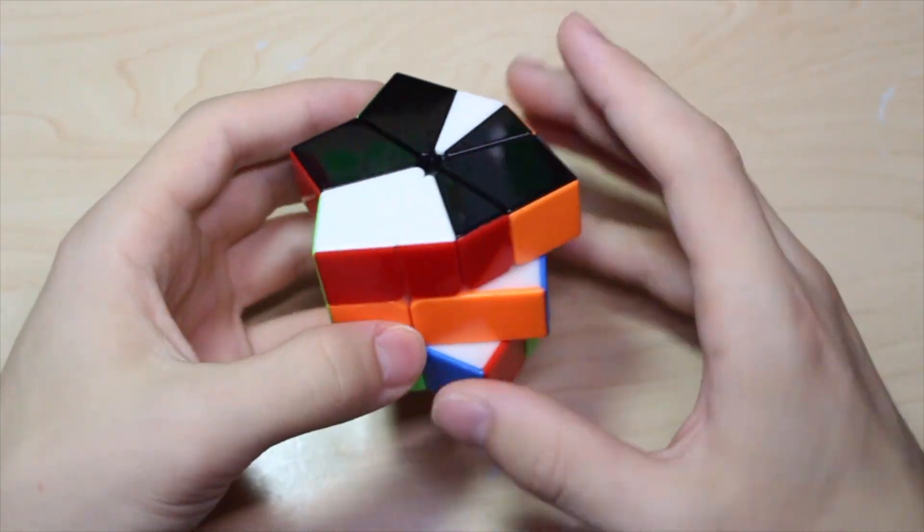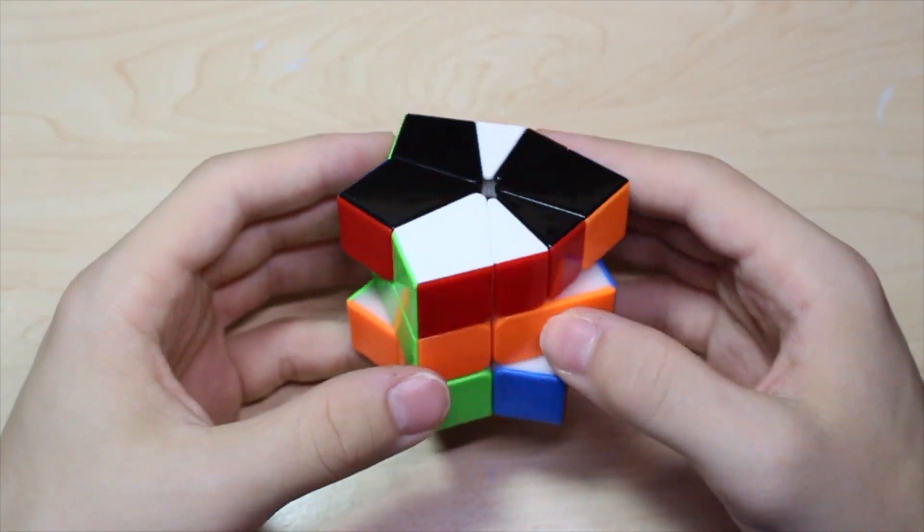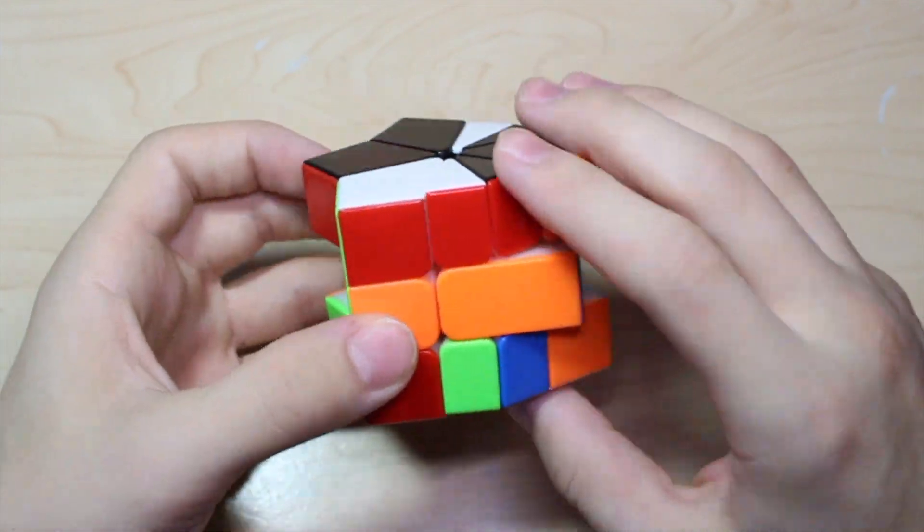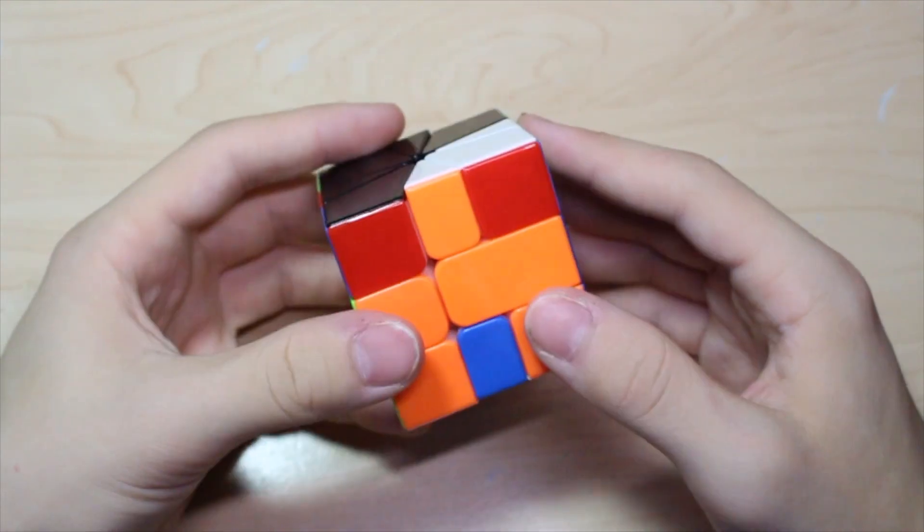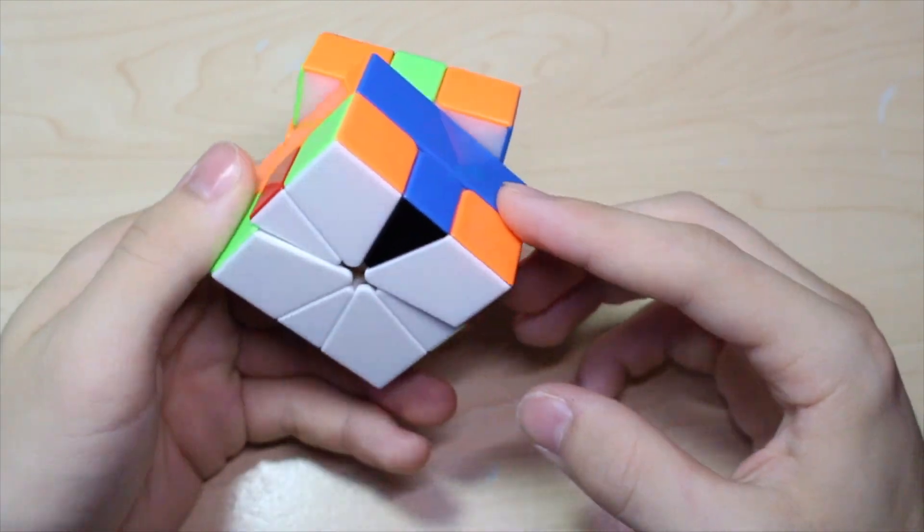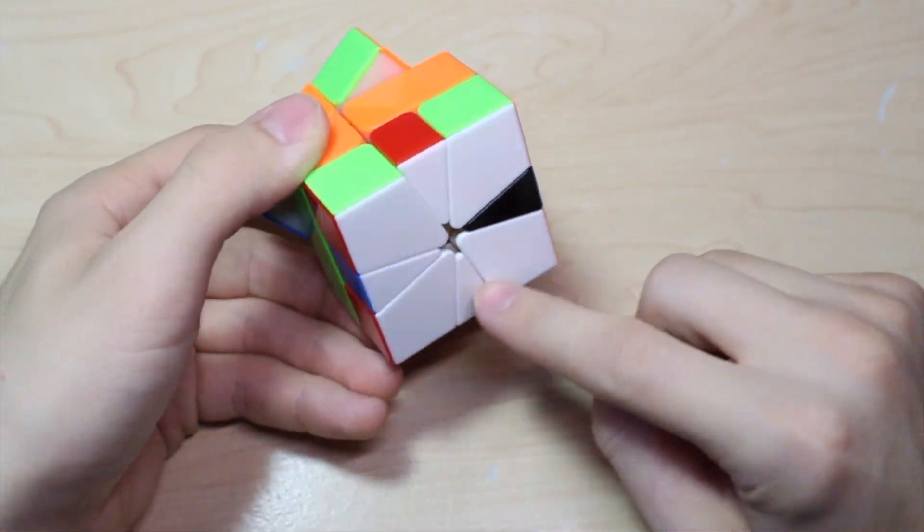So my first shape was shield shield, but it had parity so I had to do one extra slice. Here's what I did, and then CO. And then I saw here that I had solved CP on the bottom.